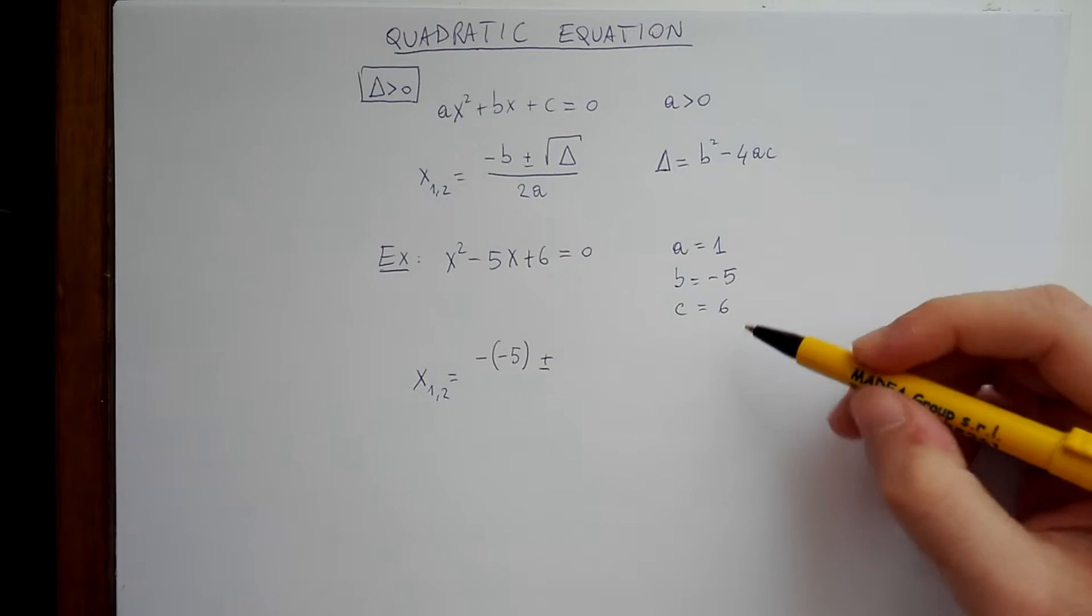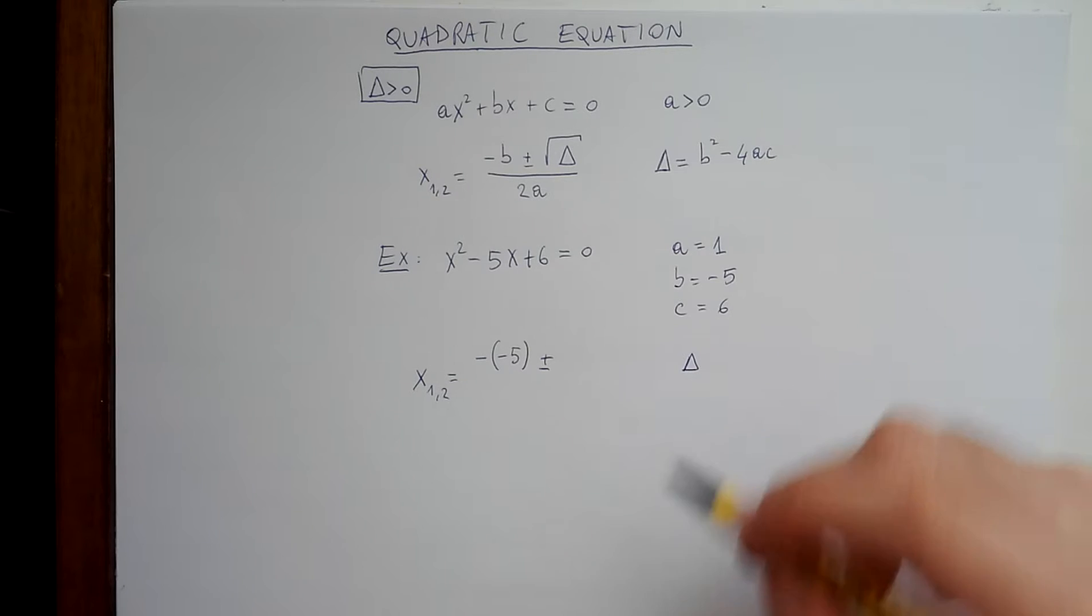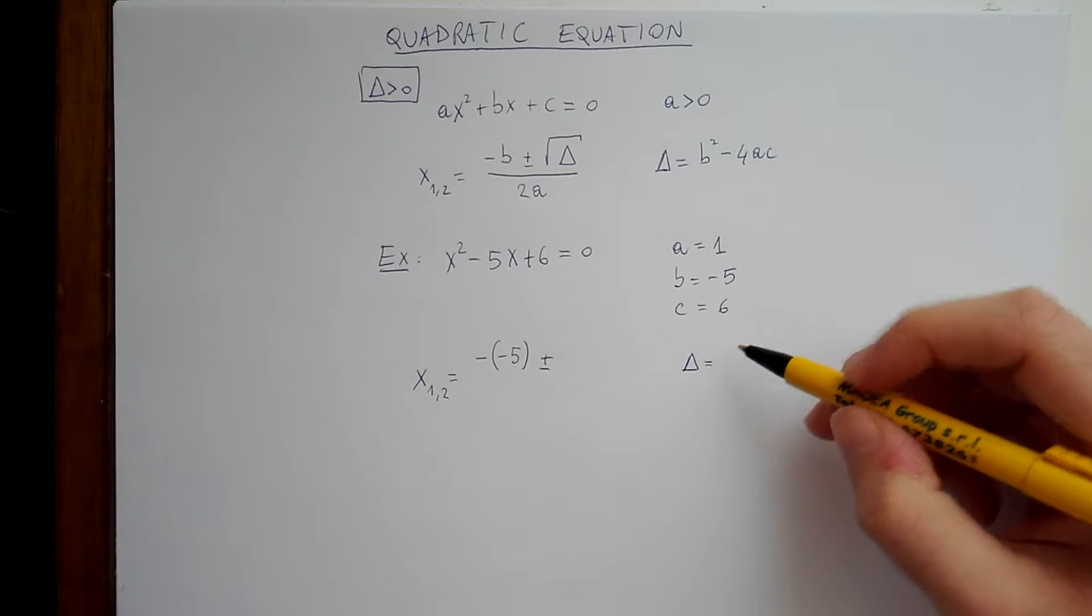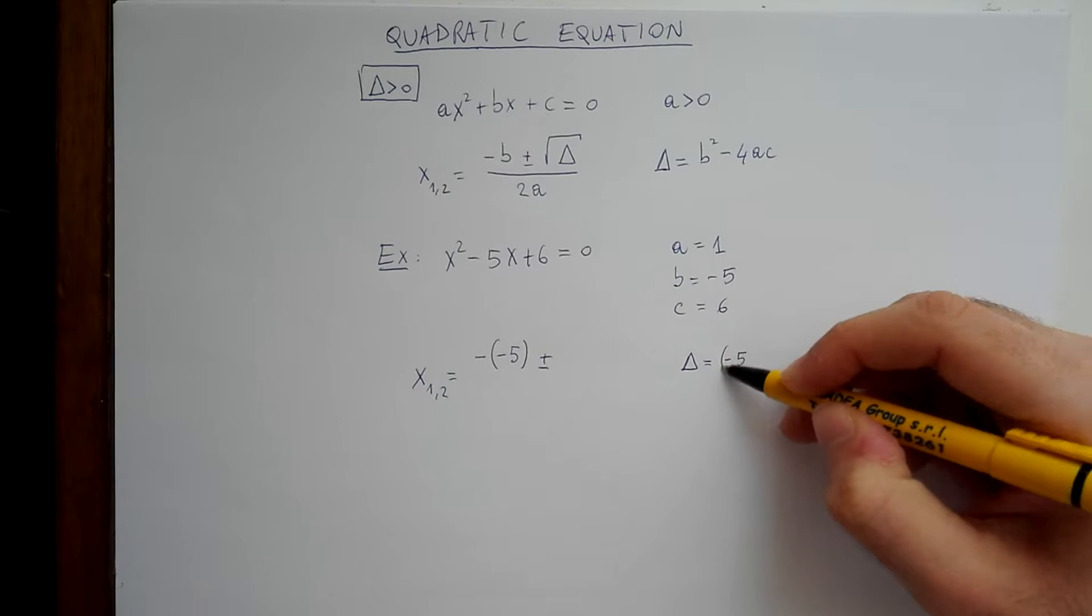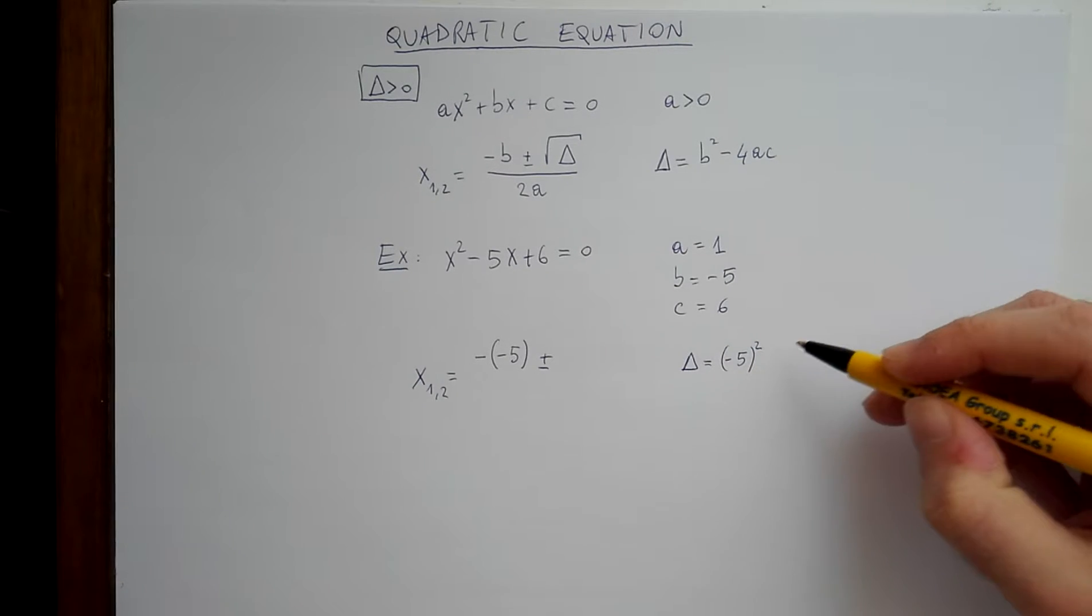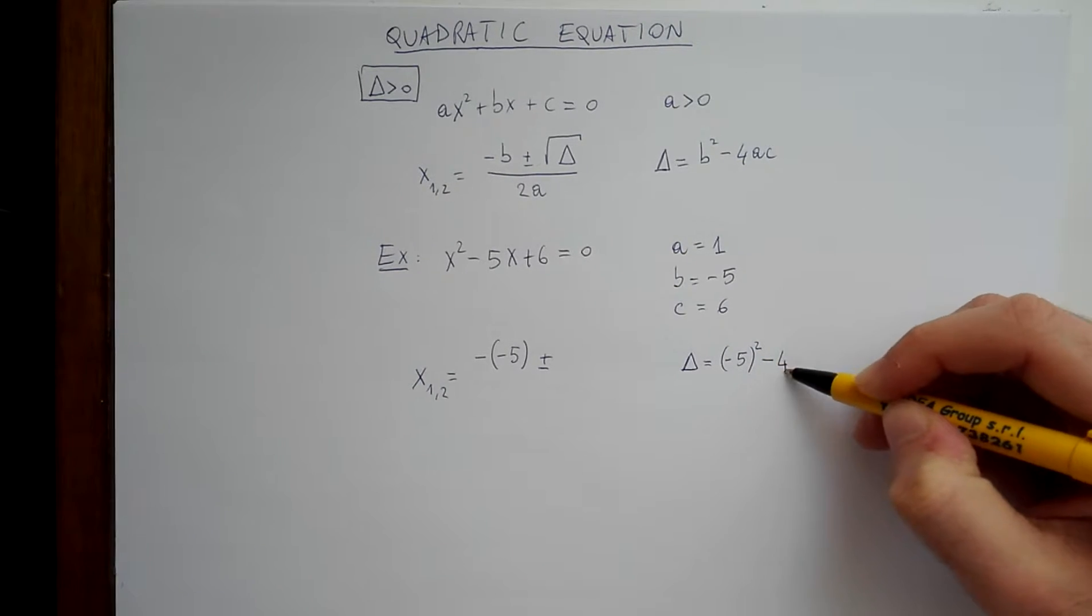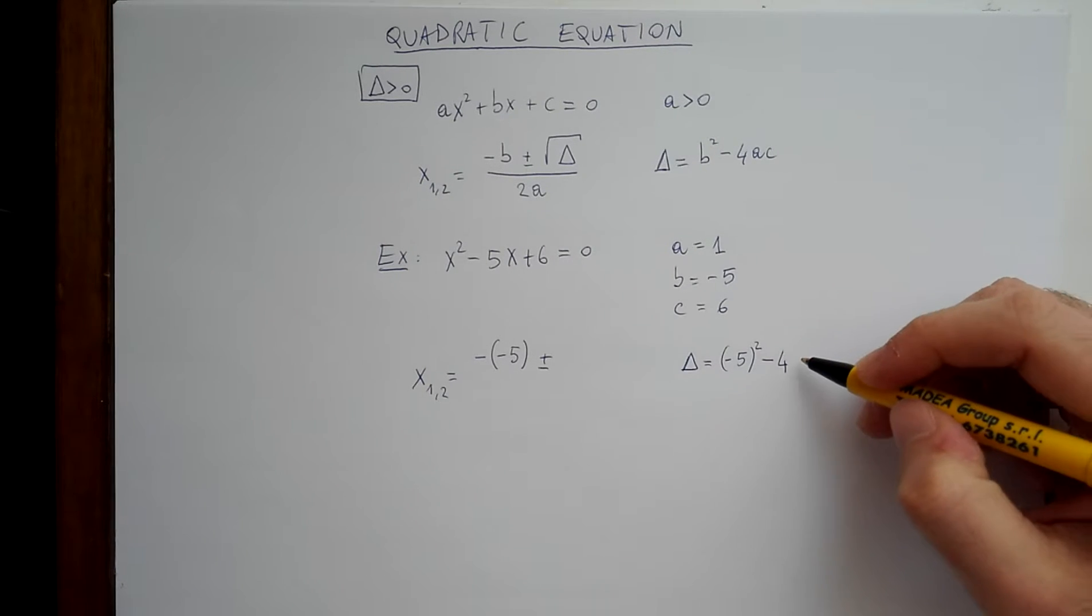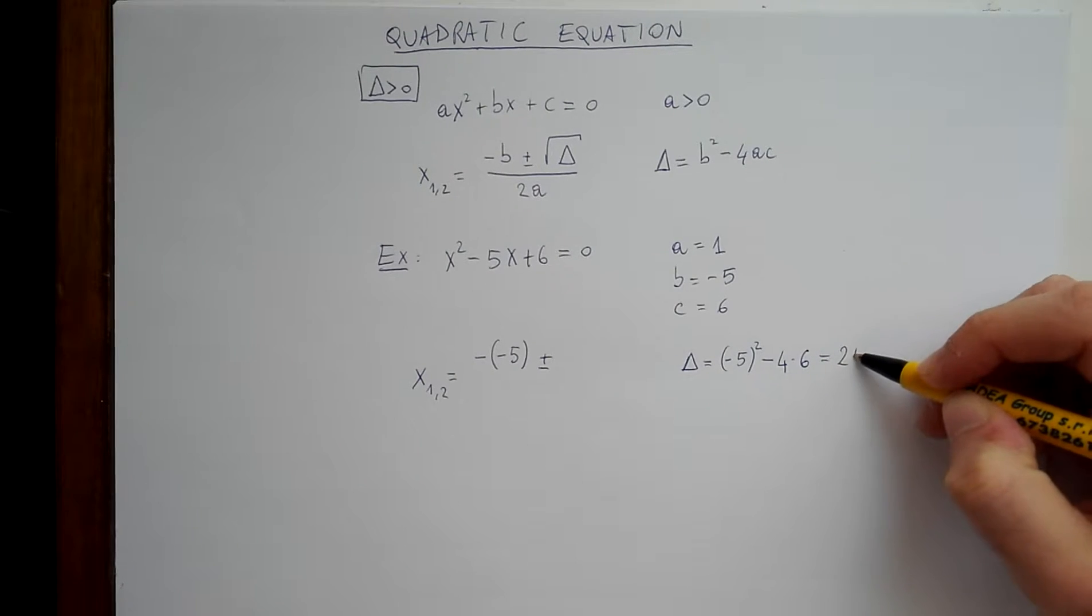So let's compute delta here in the side of the page. So delta is b squared, so minus 5 squared minus 4, a times c, a is 1, c is 6, so just 6. And we have 25,